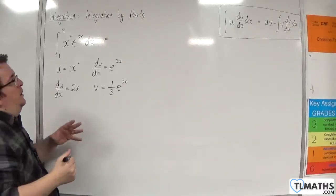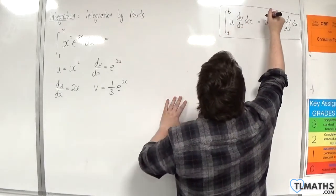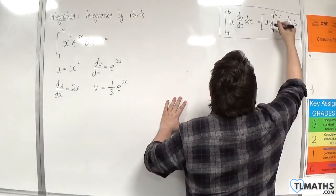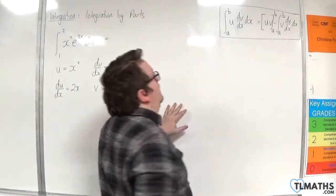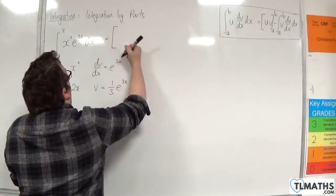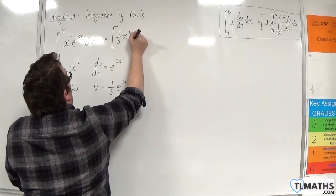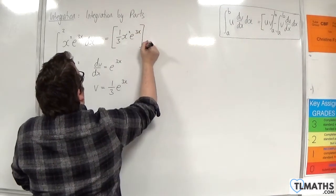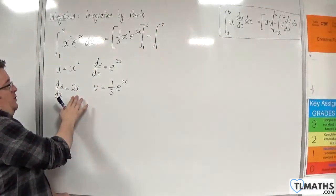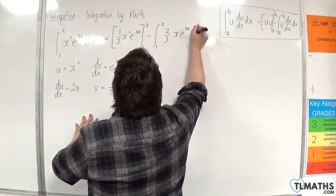Using the formula here, because we've got limits and it's a definite integral evaluated between a and b, we need to evaluate u times v between a and b, then integrate between a and b. So we use square brackets: u times v is 1 third x squared e to the 3x, evaluated between 1 and 2, take away the integral between 1 and 2 of v times du by dx, which is 2 thirds x e to the 3x dx.